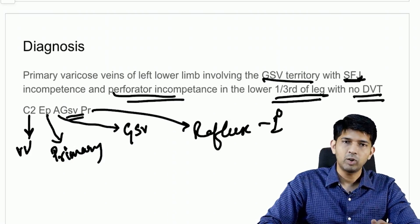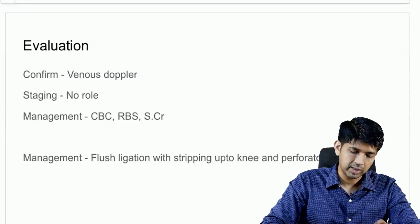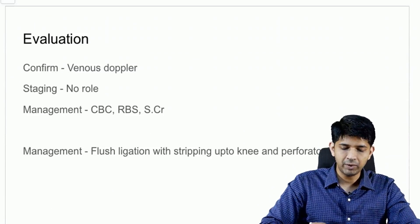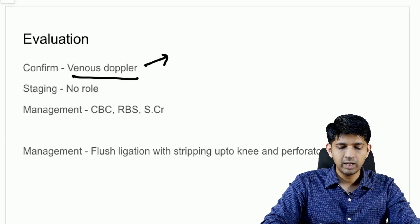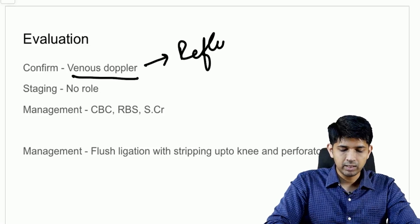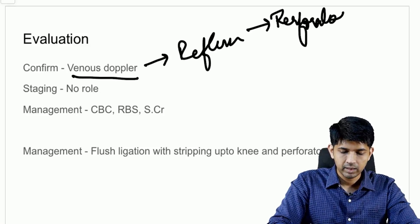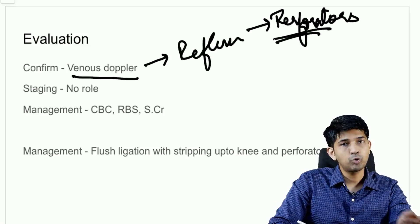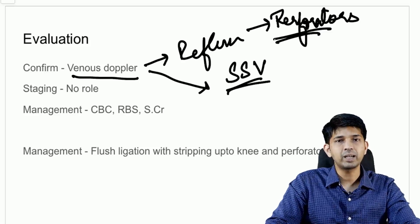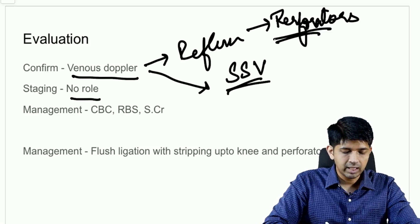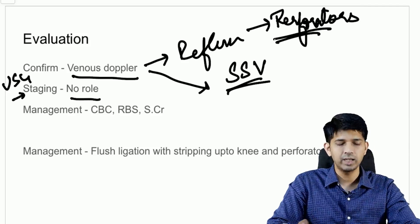The anatomy involves the great saphenous vein territory, and the pathology is reflux — indicating primary varicose veins and not an obstructive pathology, which would indicate secondary varicose veins. For investigations, the first test would be a venous Doppler to confirm the diagnosis — it will identify reflux, locate the perforators, and also assess the short saphenous vein territory. Staging investigations such as USG abdomen are not indicated in this case.